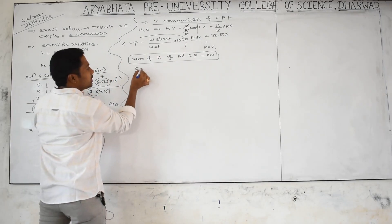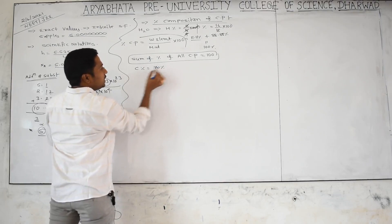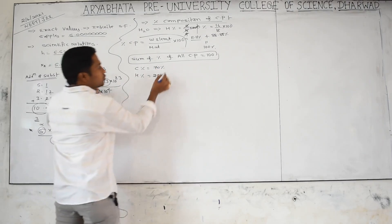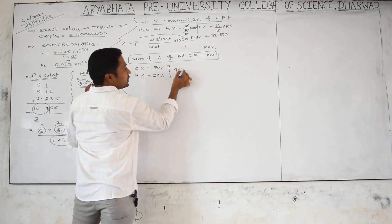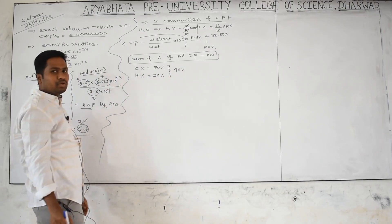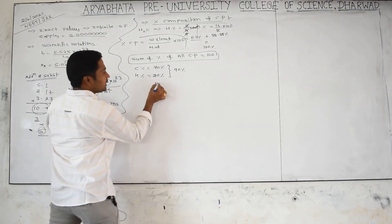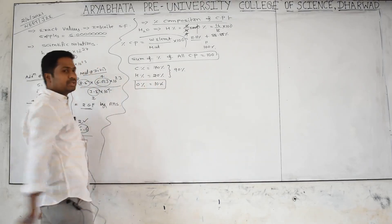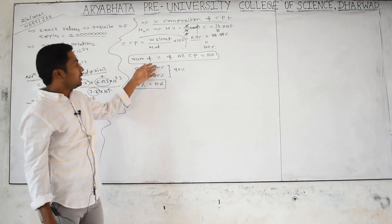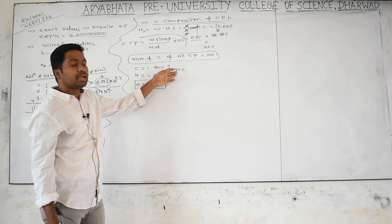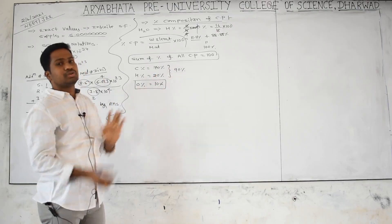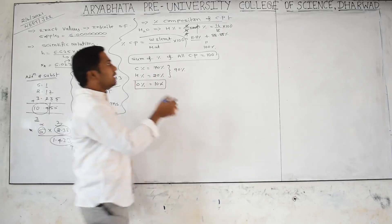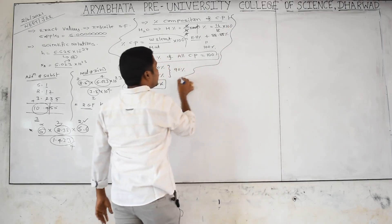For example, if carbon percentage is given as 70% and hydrogen as 20%, together that is 90% — which is not 100%. The lagging 10% is always related to oxygen. This is an important point: in some problems, a few element percentages are given; if they don't add to 100, the remaining percentage always belongs to oxygen.